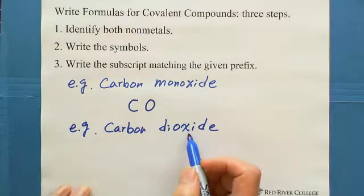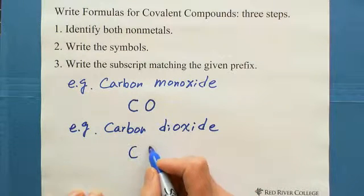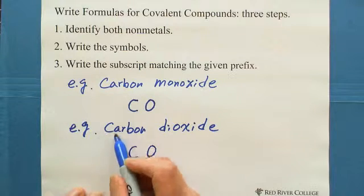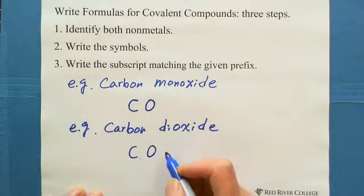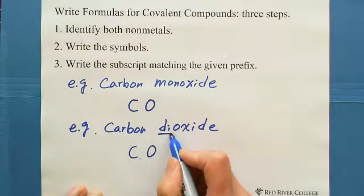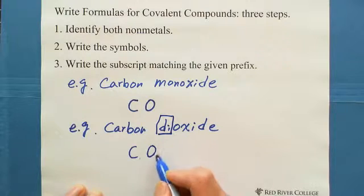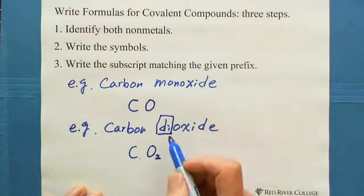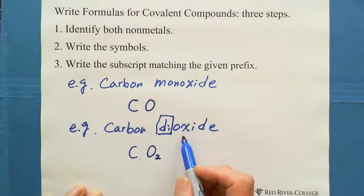The other example: carbon dioxide. We write carbon C, oxygen O. The first element, carbon, has no prefix, meaning 1 — subscript is 1, we don't need to write the 1. And oxygen has prefix di, which means 2. We write the subscript 2 matching the given prefix di. So the formula for carbon dioxide is CO₂.